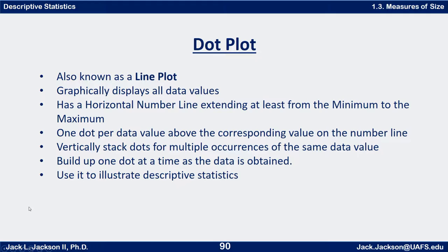A dot plot is sometimes also known as a line plot, though I will pretty much always refer to it as a dot plot. It graphically represents every single data value. It has a horizontal number line for a horizontal axis, and it's got to extend at least from the minimum data value to the maximum data value. We have one dot for every data value, placed above the corresponding value on the number line, and if you get more than one dot at the same value you just vertically stack them for multiple occurrences of the same data value.